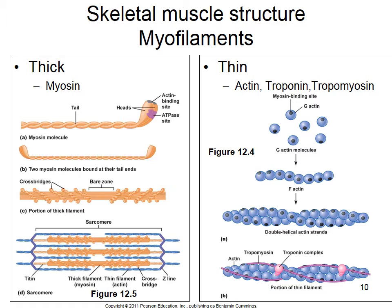Myosin is a motor protein — it uses ATP to move. In thick filaments, myosin molecules pair end to end with head regions facing opposite directions. Many myosin molecules hook together, with their head regions forming the periphery. The bare zone in the middle of the sarcomere contains only the tail regions of myosin. Thick filaments are made up of many myosin molecules bonded together.